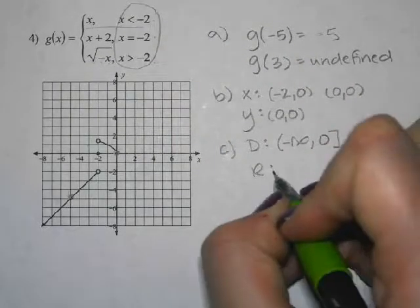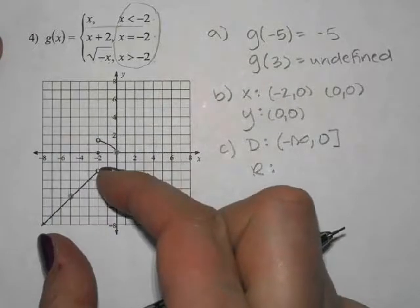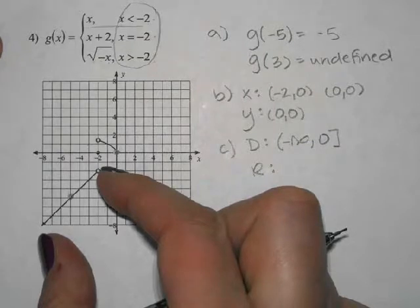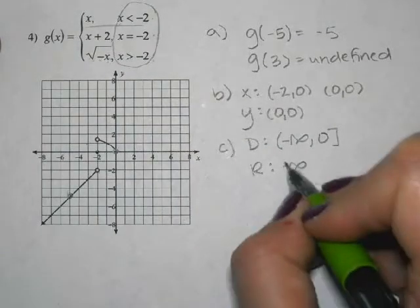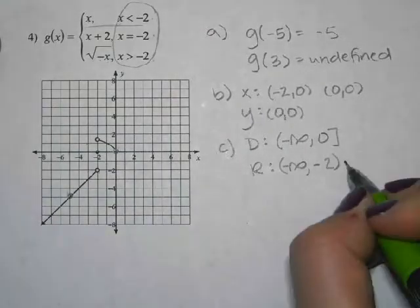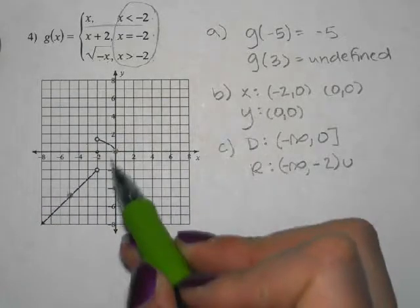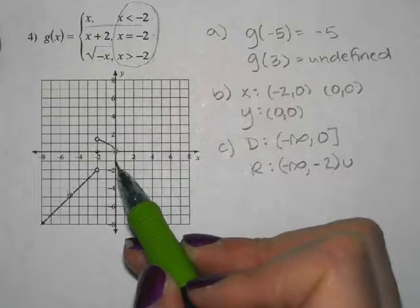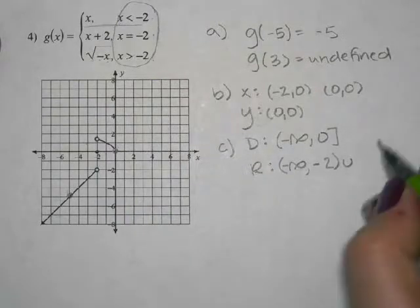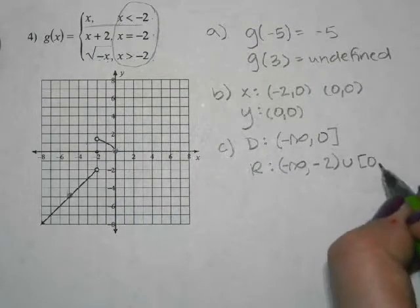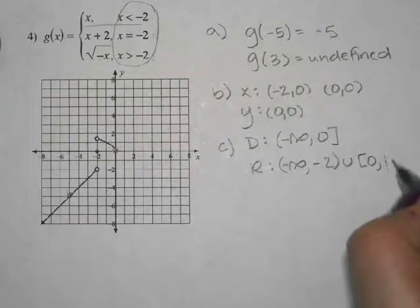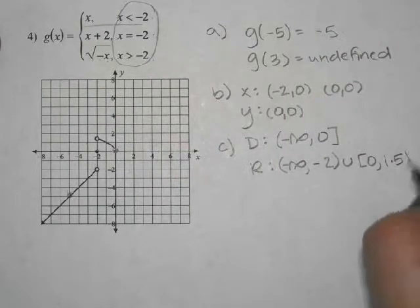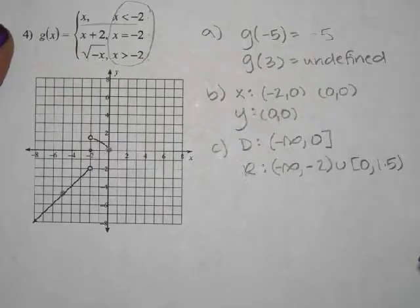The range is a little bit harder to write. For the first piece: negative infinity up to negative 2, but don't include negative 2. Then there's a little gap where y values are not used. The next lowest y value you can see is 0 — you can include 0. And then 0 to the very highest y value you can see, which looks like about 1 and a half. For the purpose of this worksheet, if it looks like a decimal, just make your best guess and call it good. That's our range.